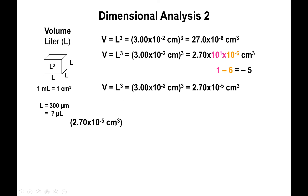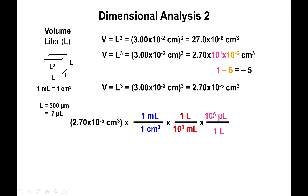Now we use the relationship that 1 cubic centimeter equals 1 mL, placing 1 cubic centimeter on the bottom and 1 mL on top to cancel cubic centimeters. Then, using the fact that 1000 milliliters equals 1 liter, place milliliters on the bottom. Finally, since 1 liter equals 10 to the 6 microliters, place the liter on the bottom and 10 to the 6 microliters on top. Everything cancels except microliters, giving a final volume of 2.70 times 10 to the negative 2 microliters.